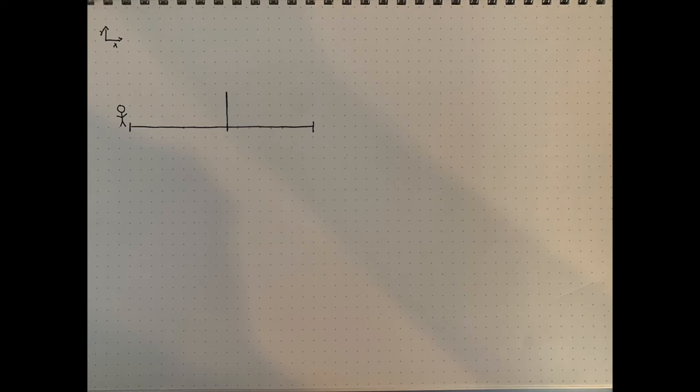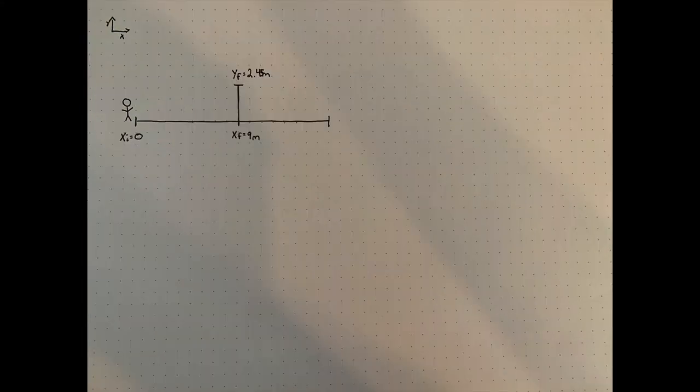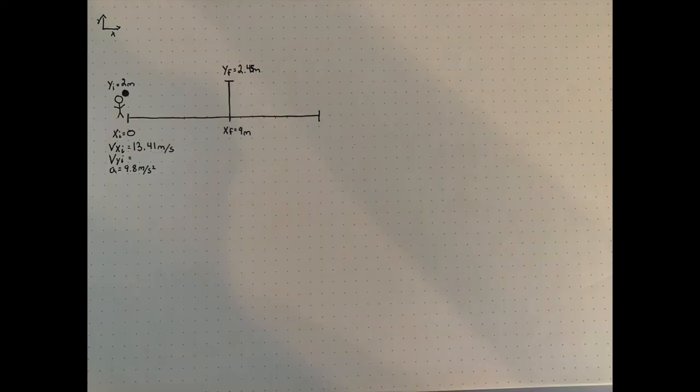The person serving stands at x initial equals zero and needs to hit the volleyball at least 9 meters far at a final height of 2.45 meters high to make it over the net. The server will be myself and I serve the ball at 2 meters high. The average standing float serve hit is at 13.41 meters per second.